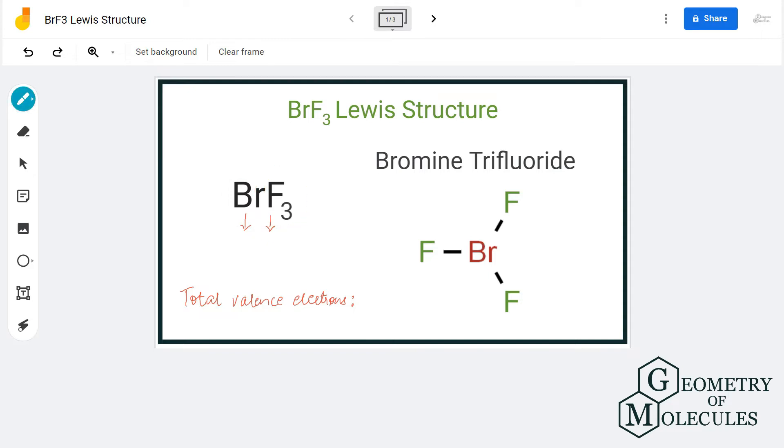To understand the Lewis structure of this molecule we shall first look at the total number of valence electrons in this molecule. Bromine has seven valence electrons and fluorine has seven valence electrons each, but as there are three fluorine atoms we are going to multiply this number by three. In total we have 28 valence electrons for BrF3.